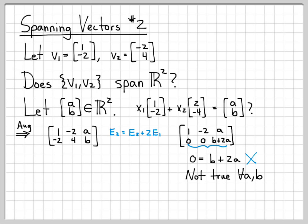That is obviously not true for all values of a and b. If a and b happen to be 0, that's true, because I'd have 0 equals 0. Or if b happens to equal -2a, that would be true. But in general, this equation is not true for all values of a and b.